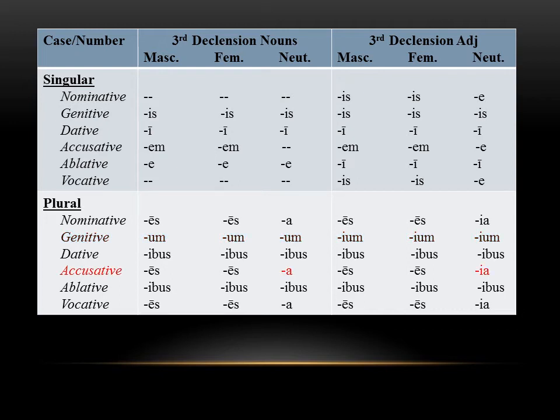The last difference to notice is in the accusative plural for the neuter. In the neuter, the nominative and accusative always have the exact same ending. So since the nominative plural in third declension adjectives ends in IA, it will also be IA in the accusative plural. Where with nouns we would usually expect an A, the adjectives have IA. So again, that I has snuck in — you want to make sure you're noting that difference.